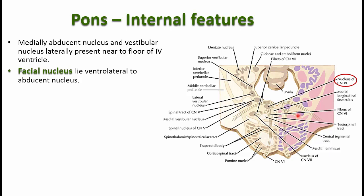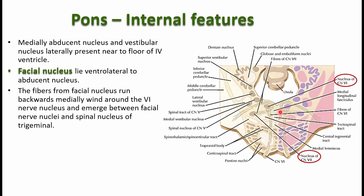The fibers of the facial nucleus first pass dorsally and then medially, winding around the abducent nerve nucleus. First, the fibers are seen between the abducent and the vestibular nucleus, then between the facial nerve nucleus and the spinal nucleus of the trigeminal nerve.